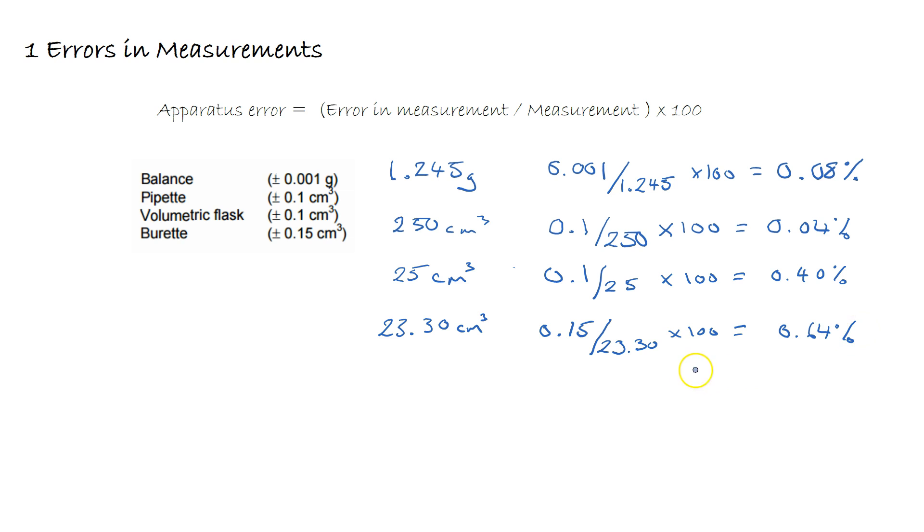That would give us an error of 0.64%. The total error, or our total apparatus error, is the summation of all of our apparatus errors, giving us 1.16%.